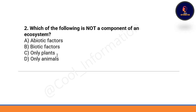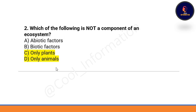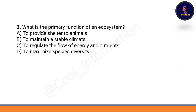Which of the following is not a component of an ecosystem? Options: abiotic factor, biotic factor, only plants, or only animals. Abiotic factor is a component of ecosystem, and biotic factor is also a component of ecosystem. Options C and D — only plants and only animals — will not be the component of ecosystem individually, as both plants and animals together are part of the ecosystem. If the option given is only plants or only animals, it will be incorrect.